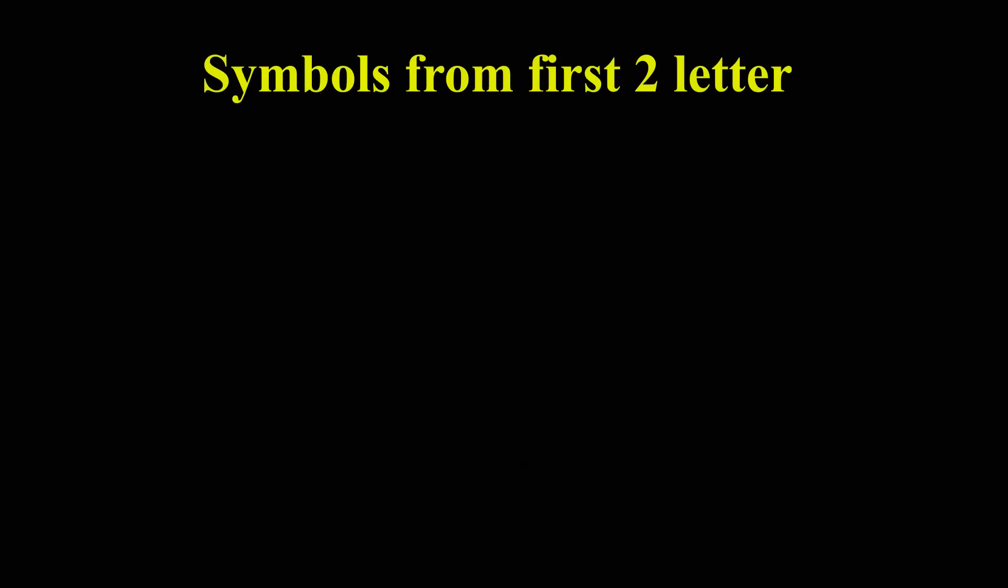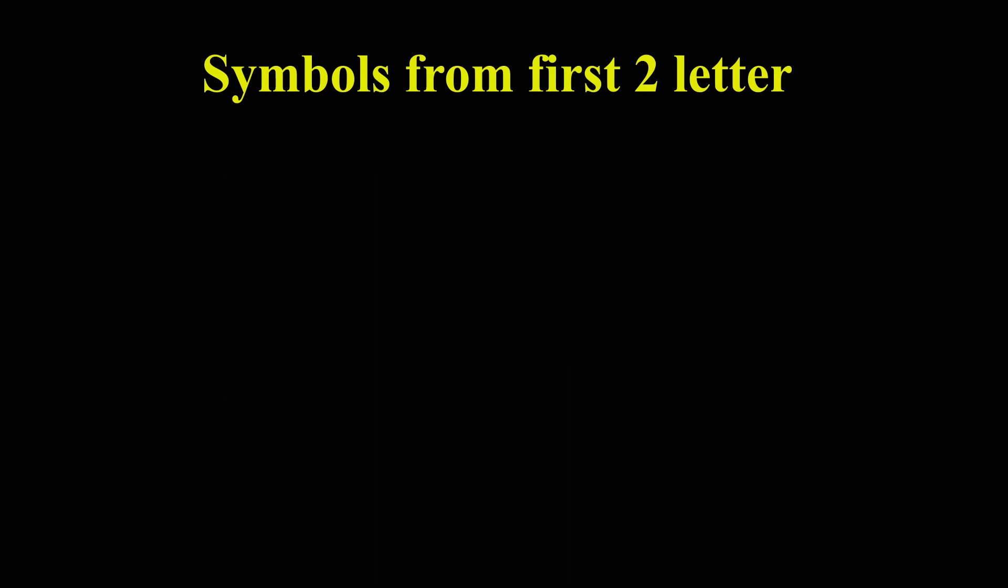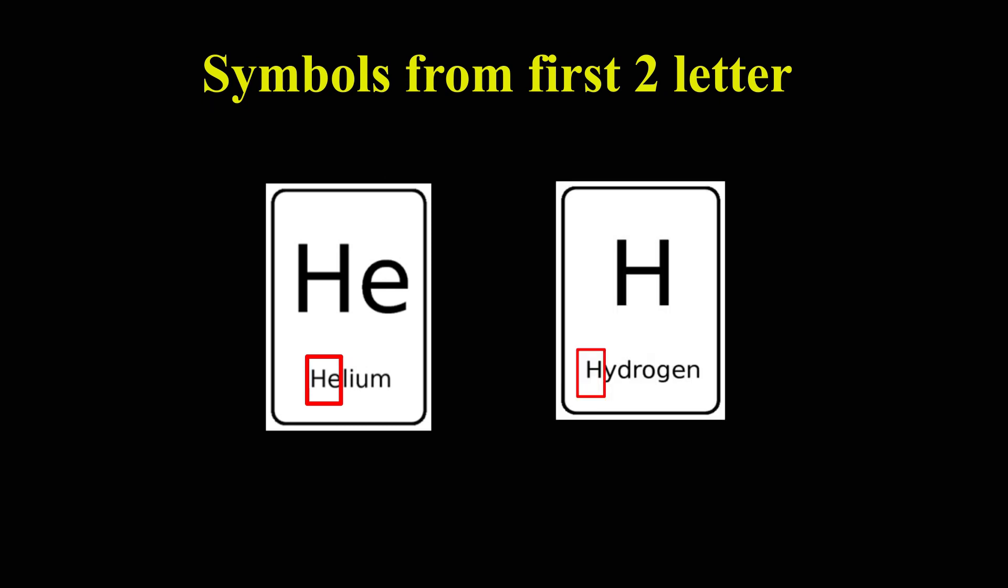Let's see few symbols which are derived from first two letters of element's English name. There are various elements which has first letter common. For example, carbon and calcium element have first letter common. When a symbol has already been defined for some other element with the common first letter, first two letters of the name are used as the symbol of the new element. For example, Helium is represented as HE because H has already been used for hydrogen. Notice that second letter E in HE is in small form.